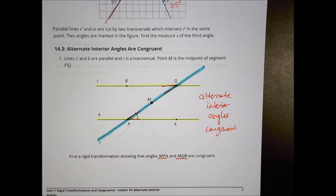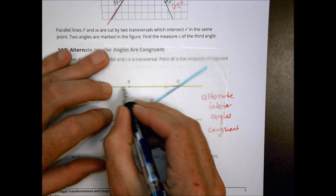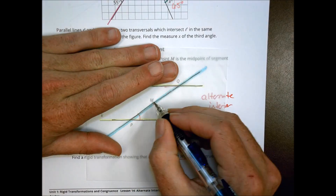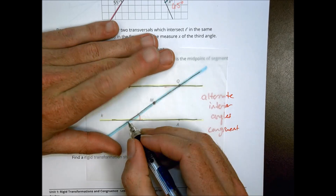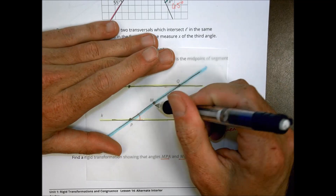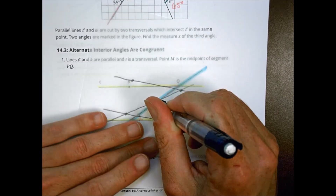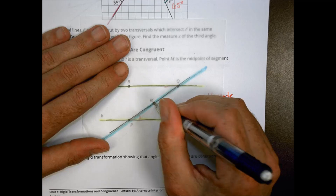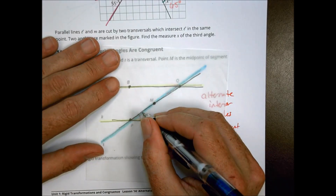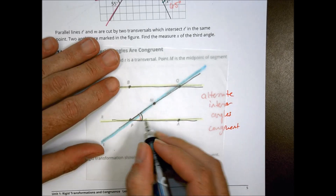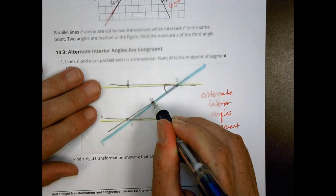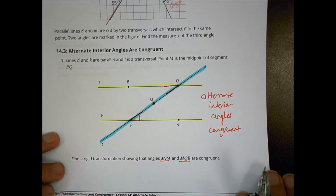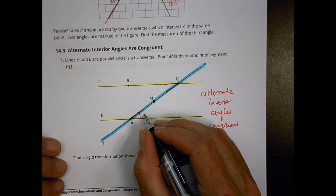To show this, take a piece of tracing paper and copy the shape, marking points P, Q, B, and A. Then do a 180-degree rotation and place it on top. The angle measurements are just moving around, so they are exactly the same. The angle snaps into place, giving the same degree measurement — this angle matches that angle measurement because alternate interior angles are congruent.